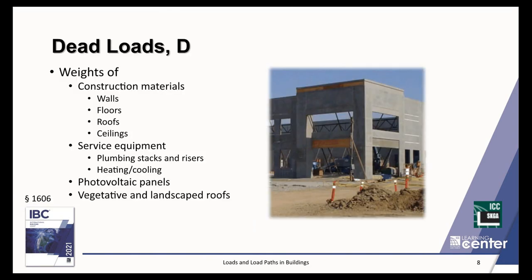Starting with gravity loads: these include weights of construction materials, service equipment like plumbing stacks, heating, and cooling systems. In the 2021 IBC, Table 1607.1 has been rearranged to be a little more clear about what types of loads we're looking at. Photovoltaic panels, vegetative and landscape roofs are relatively new loads — though on the west coast you've probably been doing this for quite a while — but those are some of the newer dead loads we're beginning to encounter.